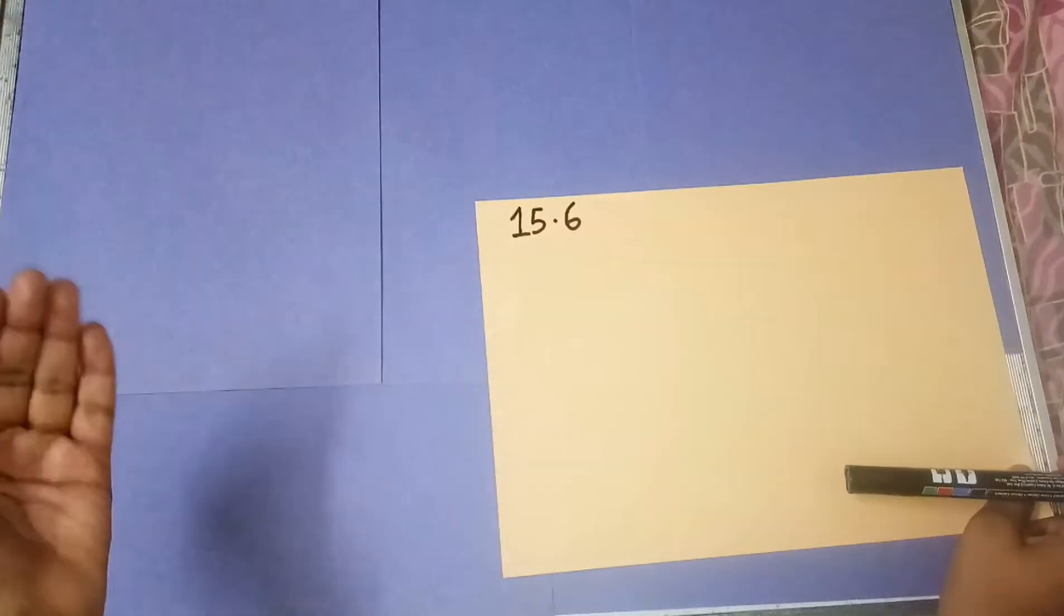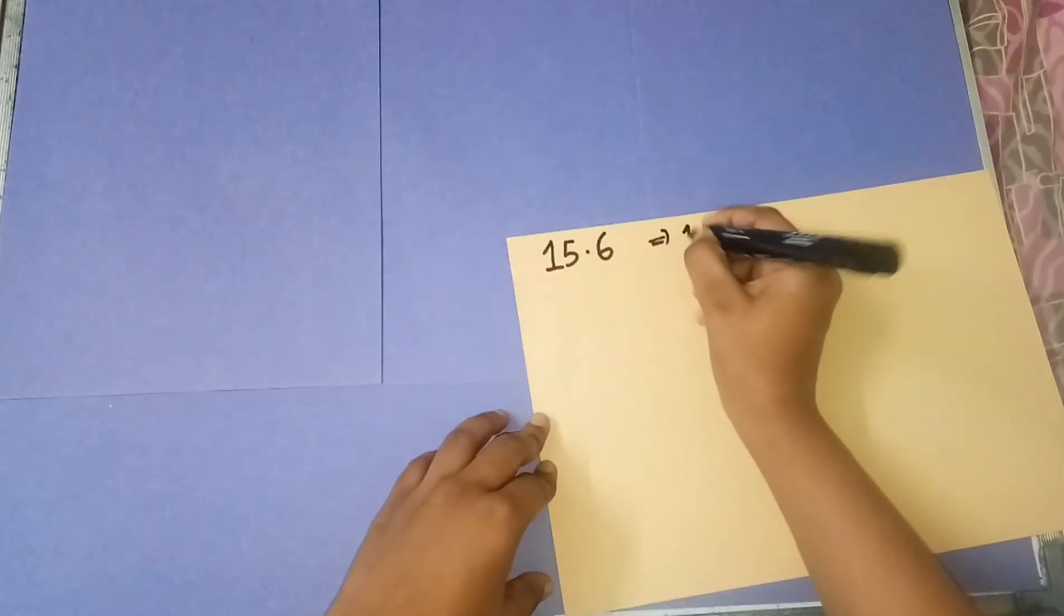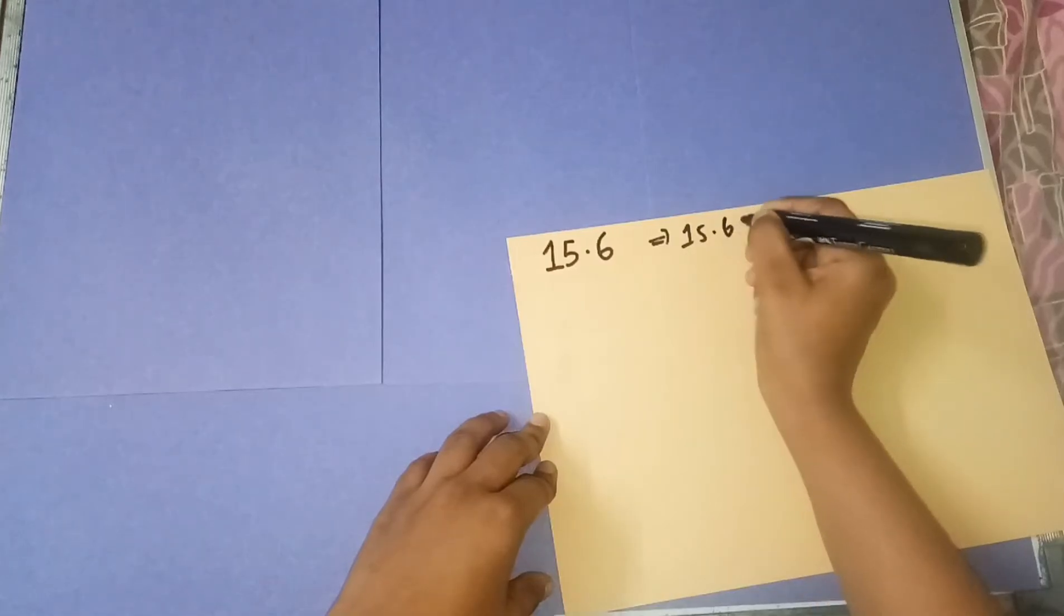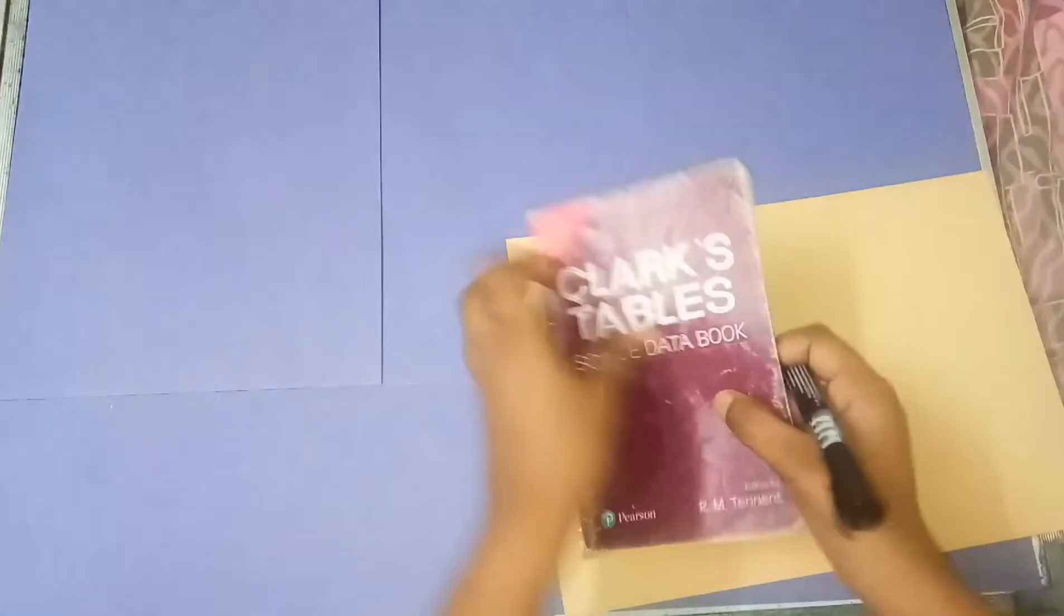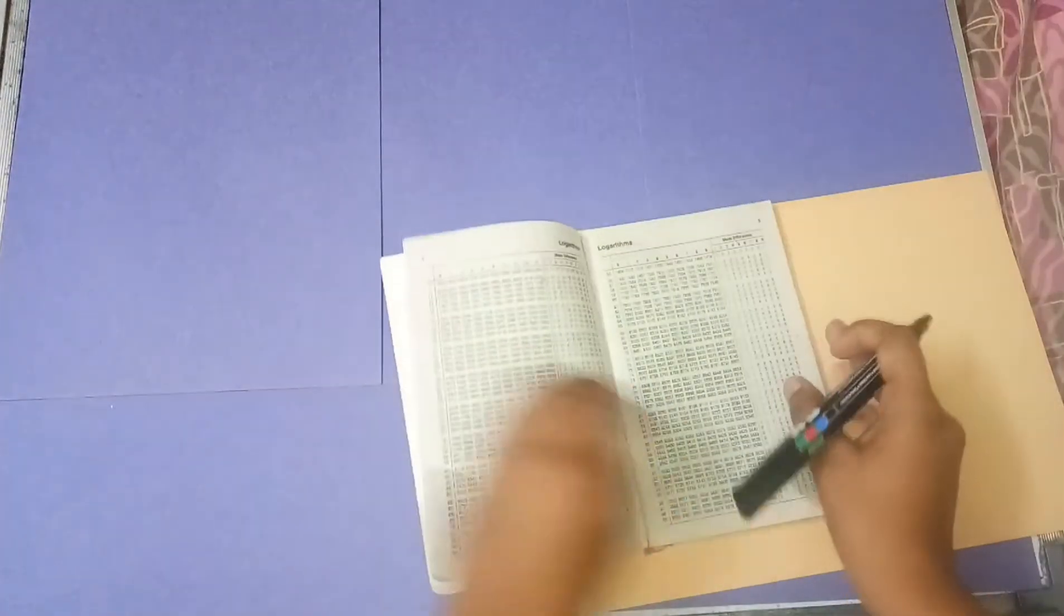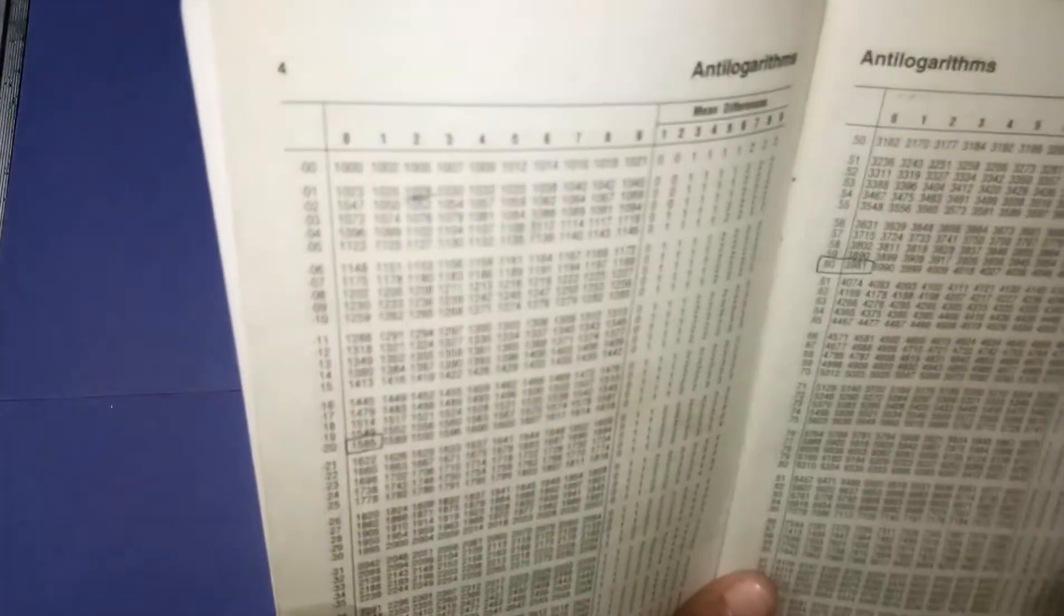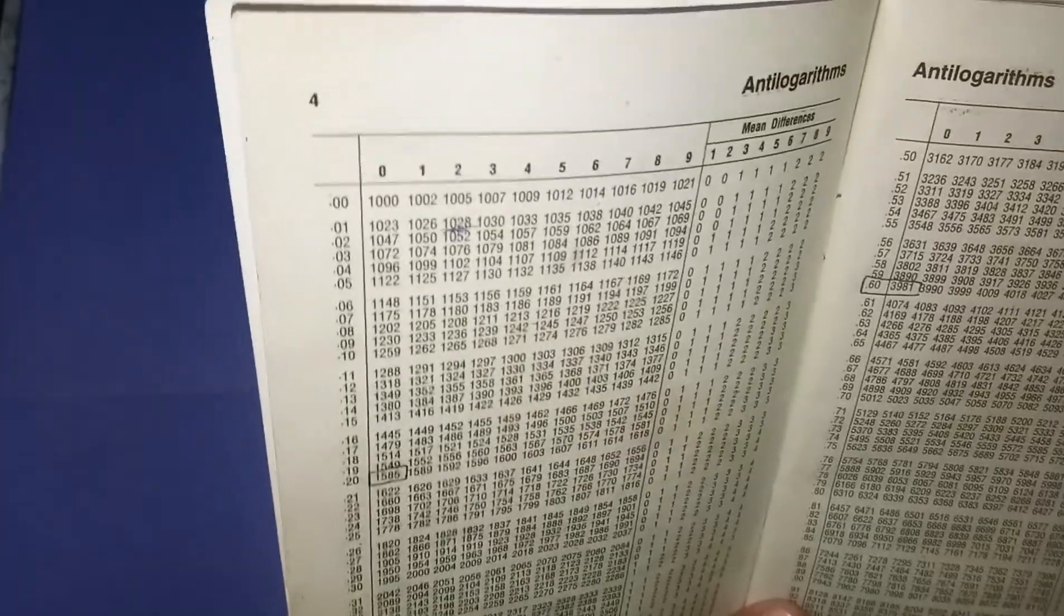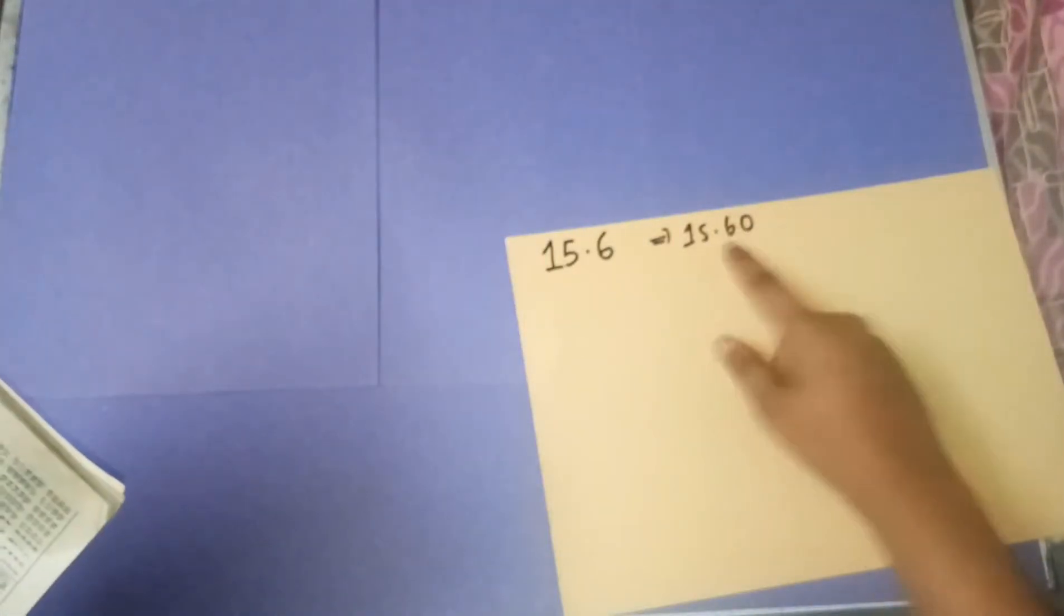Now, the steps to find the antilog are as follows. This can be written as 15.60. When you turn to your log book under the antilogarithms page, you'll see that the numbering starts from 0.00 and goes up to 0.99. The number given to us is 0.60, that is the mantissa part.